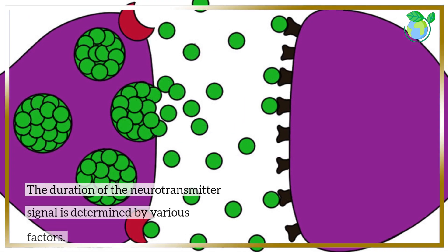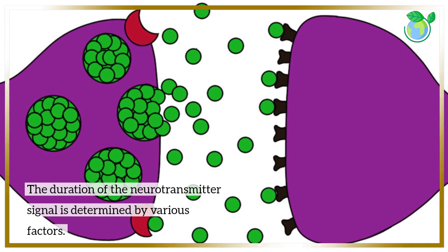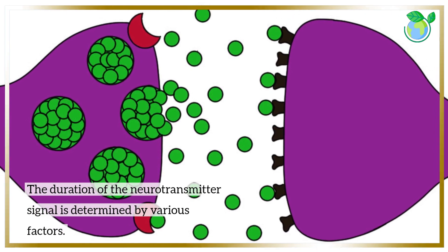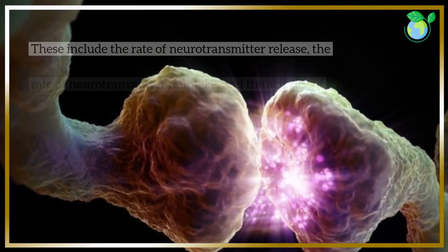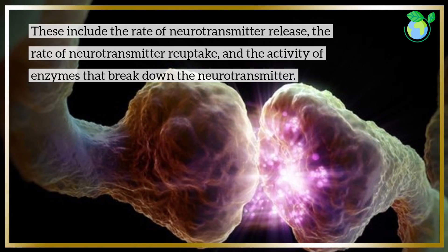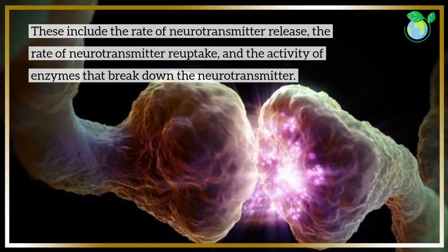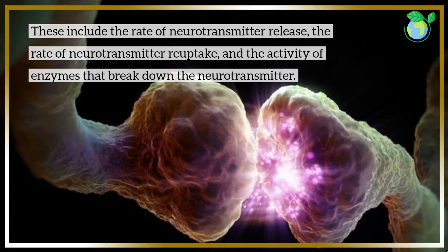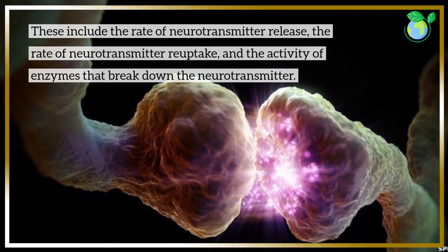The duration of the neurotransmitter signal is determined by various factors. These include the rate of neurotransmitter release, the rate of neurotransmitter reuptake, and the activity of enzymes that break down the neurotransmitter.